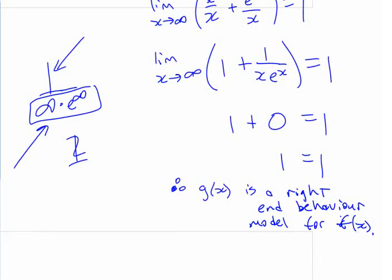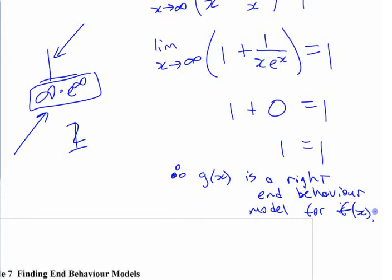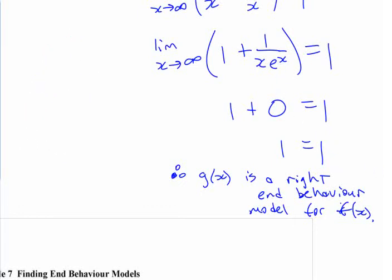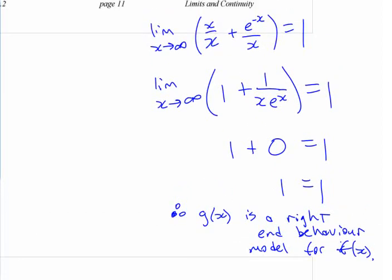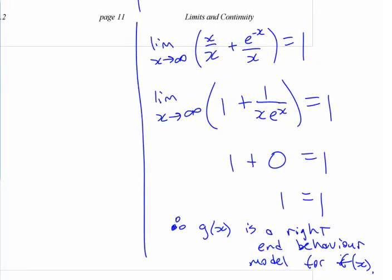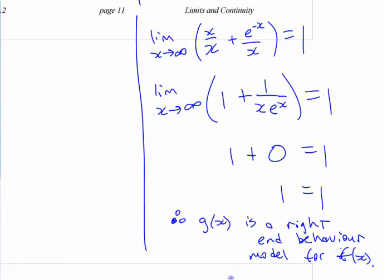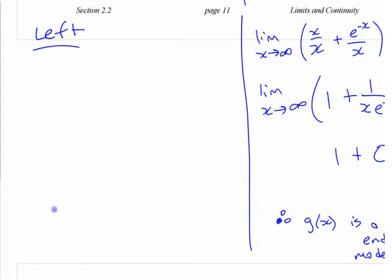I did the easier one. The harder one is the left side, and the only reason it's harder is that for one of the terms it's not obvious why it takes the value it does. I'm going to put the left end behavior model over here where I have more space. Write out the expression — take the limit as x goes to negative infinity of f(x) over h(x) — and see if you can get to the point where you're not sure what to do. We'll work through it from there.